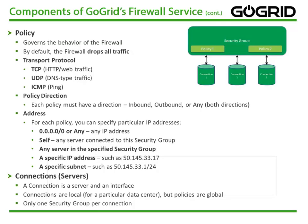There is also policy direction. Each policy must have a direction: either inbound, outbound, or any, which means both directions. The last two components of the service are address and connections. For each policy, you can specify a particular IP address. Connections are the servers to which you want the policies to apply. Connections are local, but policies are global. Only one security group is allowed per connection.